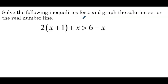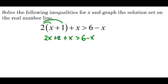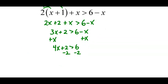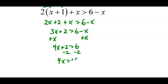Solve the following inequality for x and graph the solution set on the real number line. We distribute by 2: 2x plus 2 plus x is greater than 6 minus x. Combining like terms on the left gives 3x plus 2 is greater than 6 minus x. Adding x to both sides: 4x plus 2 is greater than 6. Subtracting 2 from both sides: 4x is greater than 4. Dividing both sides by 4, we get x is greater than 1.